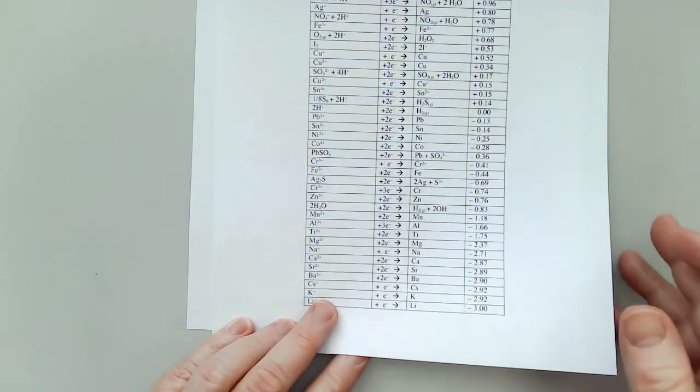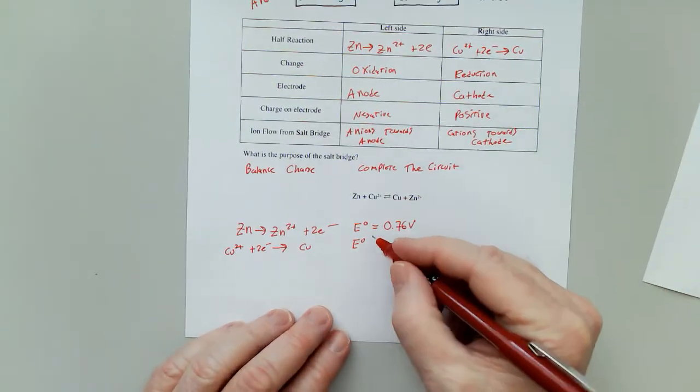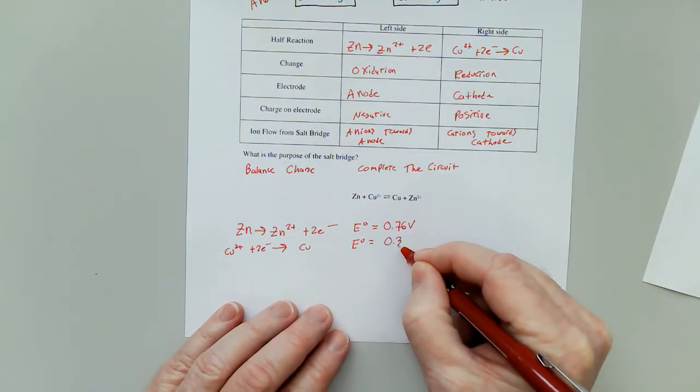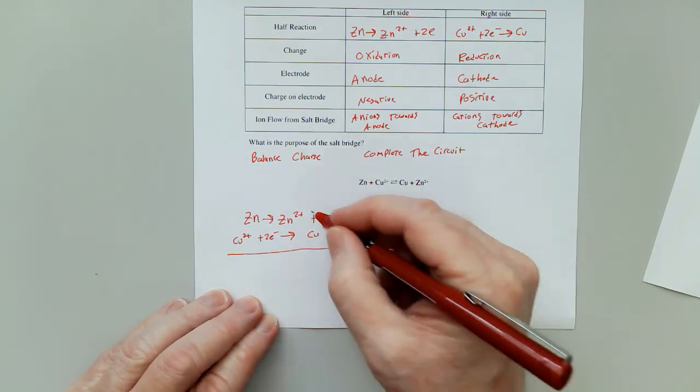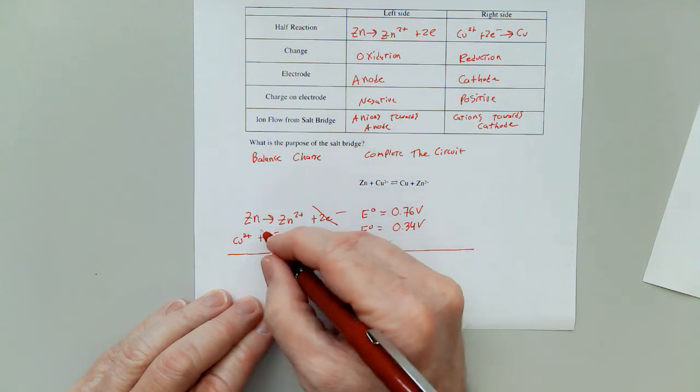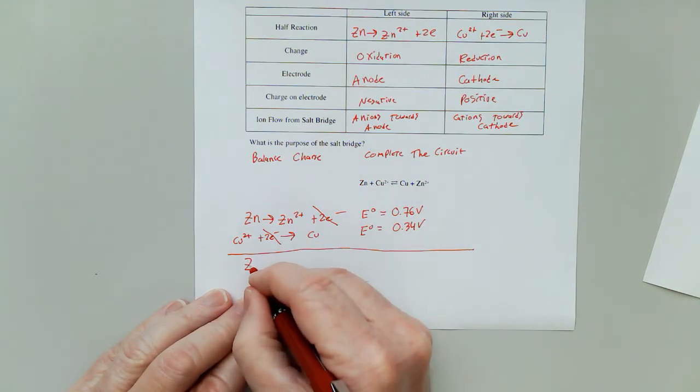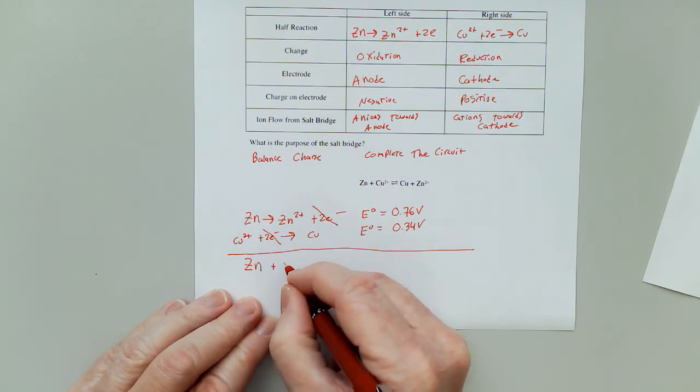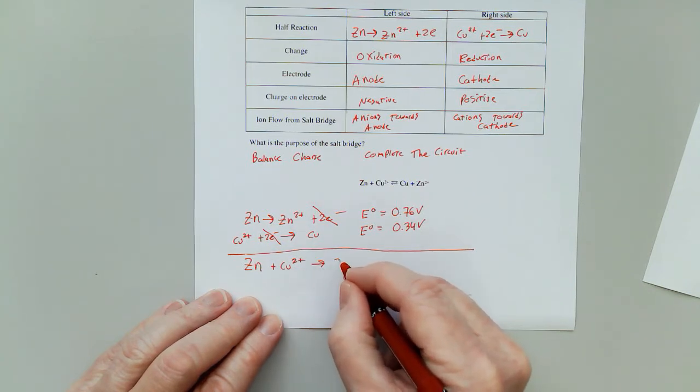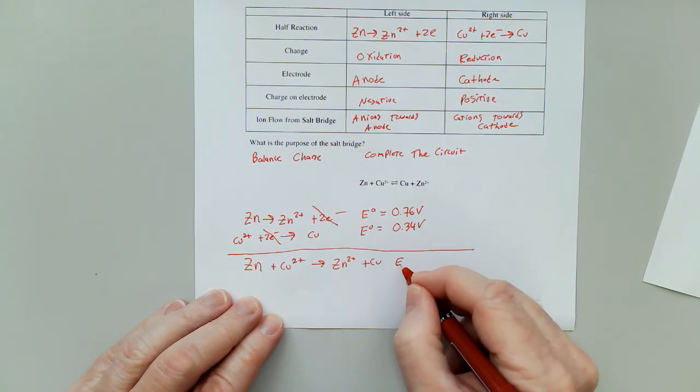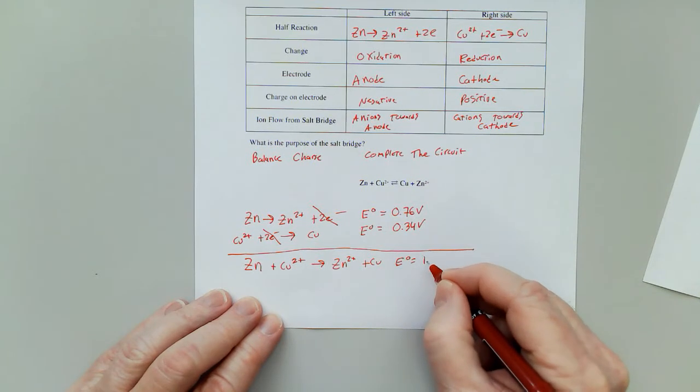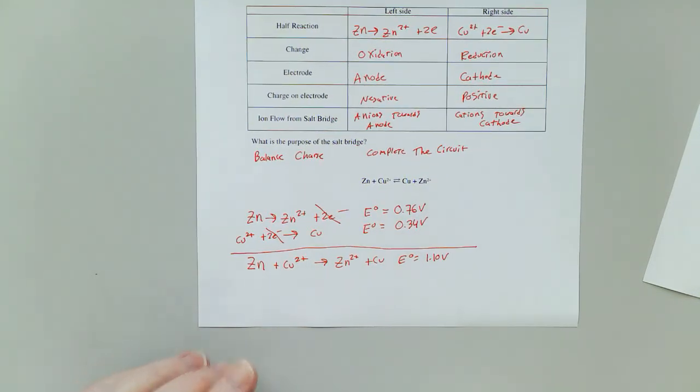0.34 volts. I did not reverse it so I don't change the sign, 0.34 volts. That and that cancels, so my overall reaction is Zn plus Cu 2 plus to give me Zn 2 plus and Cu, and the electromotive force added together is 1.10 volts.